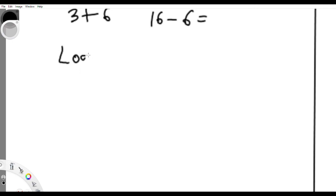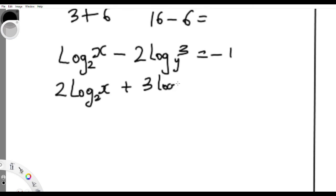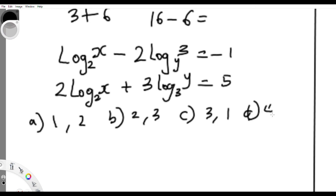Now, you see questions like log₂(x) - 2log_y(3) = -1. And you have 2log₂(x) + 3log₃(y) = 5. Find x and y. Option a might be 1, 2. Option b, that's x and y. Option b might be 2, 3. Option c 3, 1. Option d, the last one 4, 2.